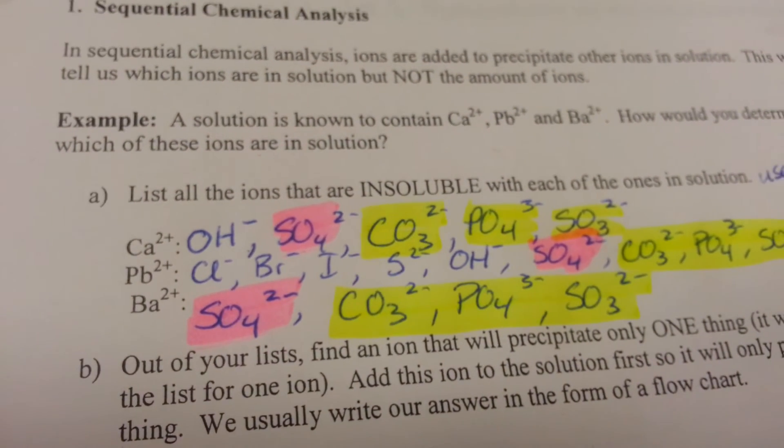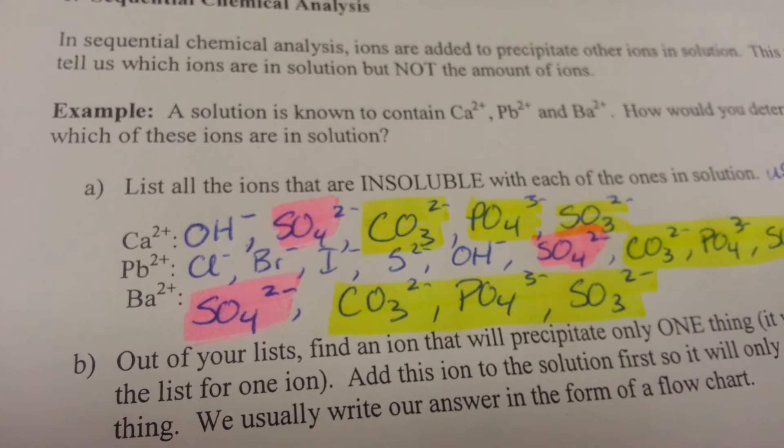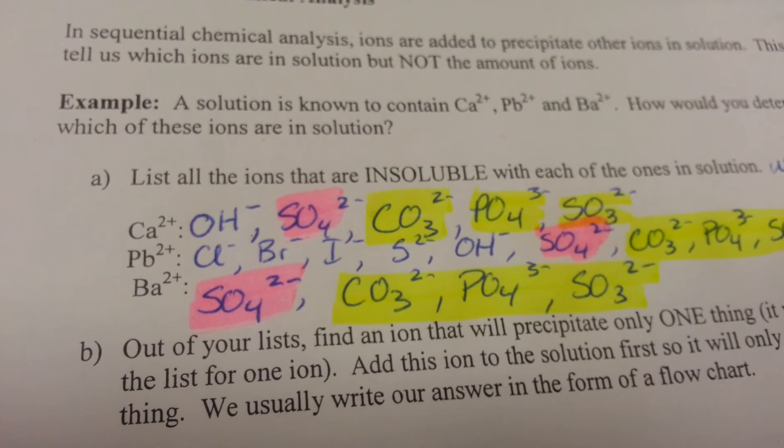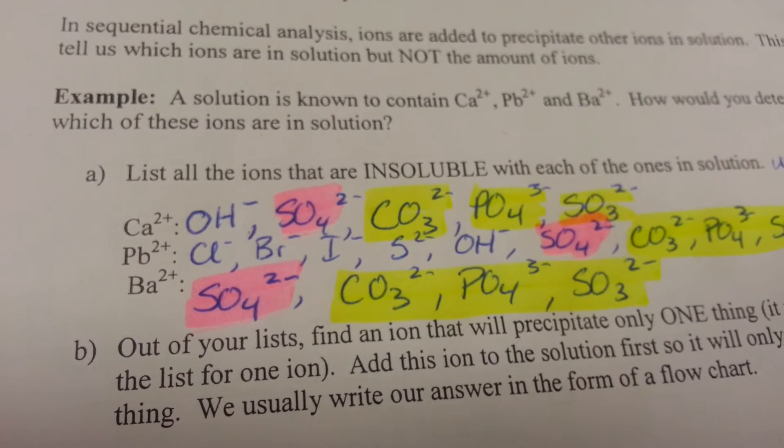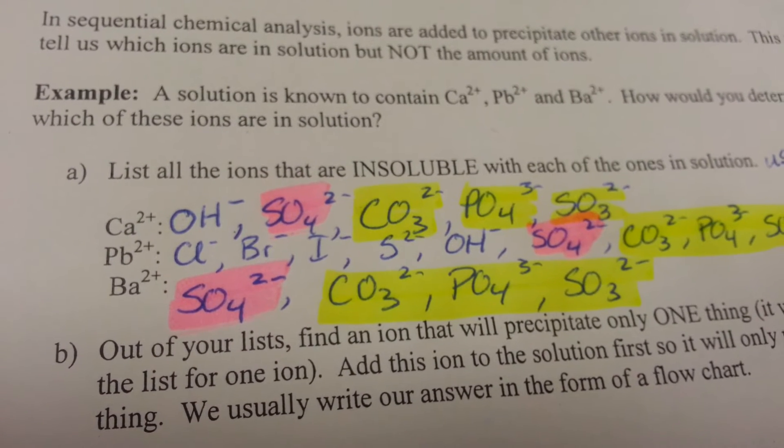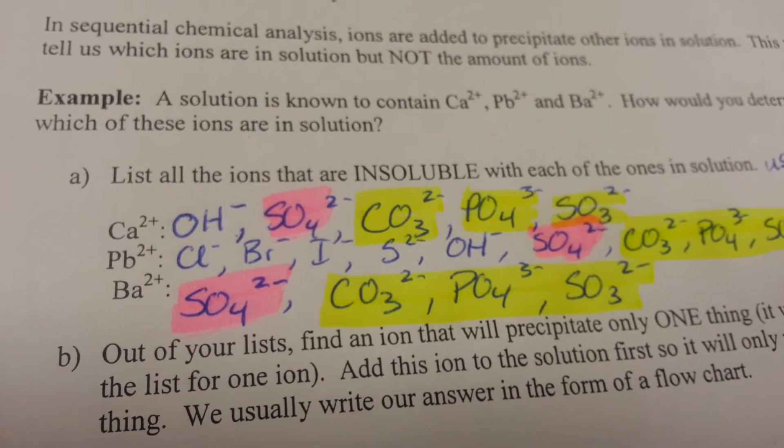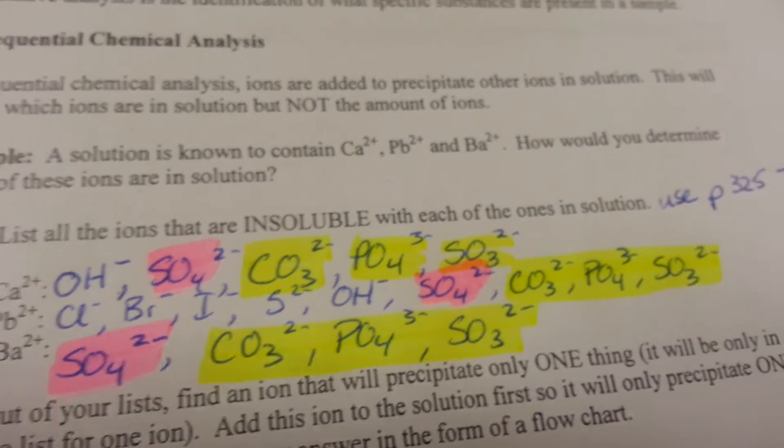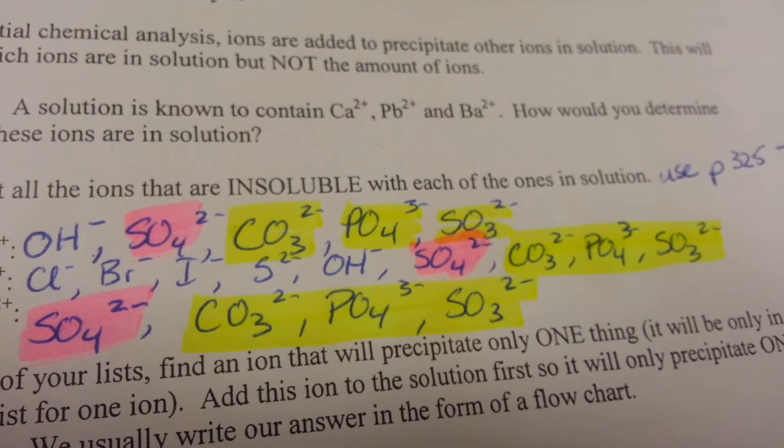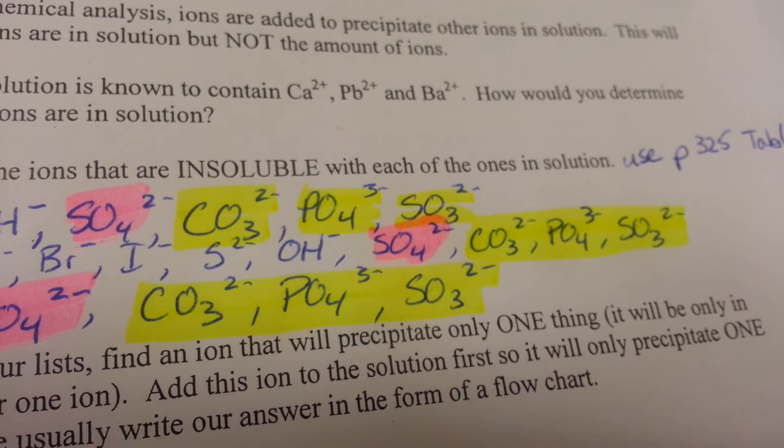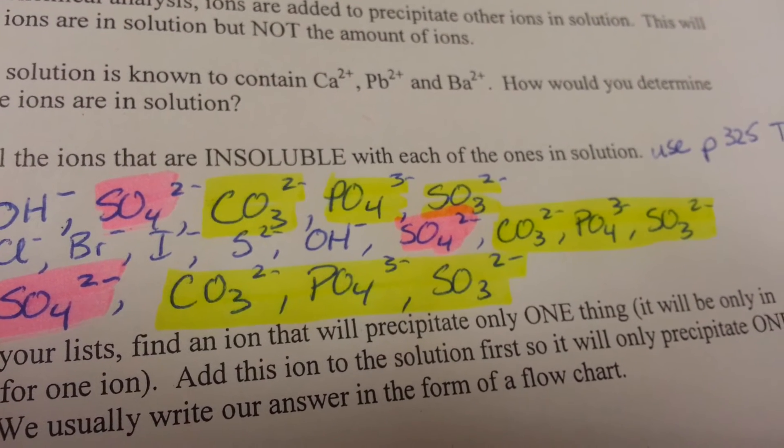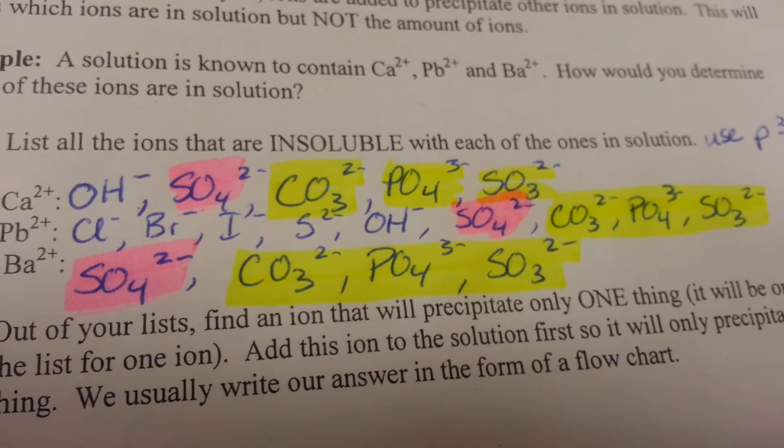Welcome back. Trying to use the process of elimination, I've identified substances that are common through each of these three types of ions. You can see that the sulfates are highlighted in pink, common amongst all three. And then we have the grouping of the carbonate, the phosphate, and the sulfite. And that's common amongst all three. None of these are an appropriate choice for us to do first.